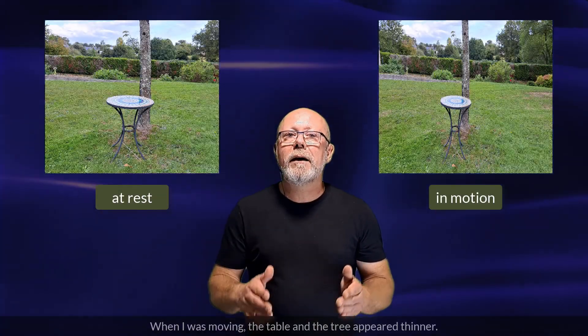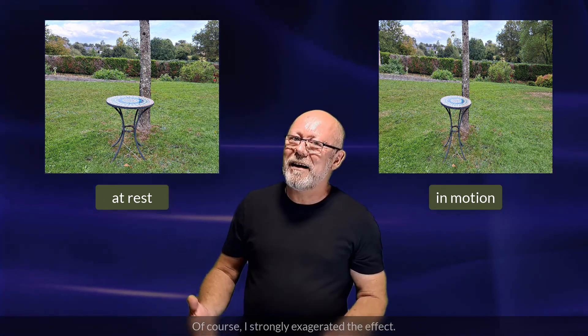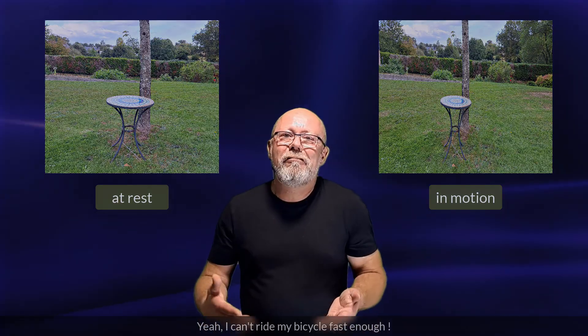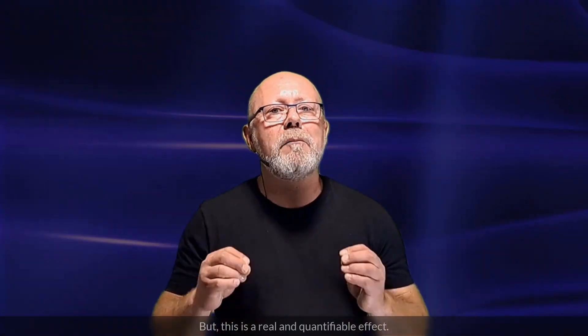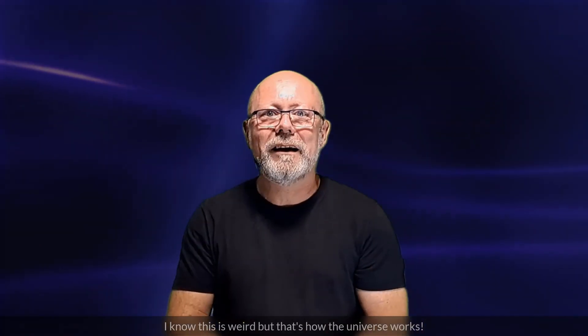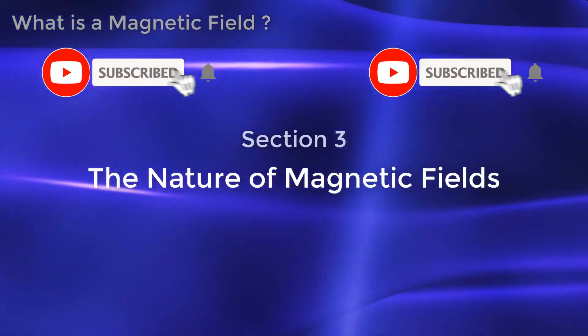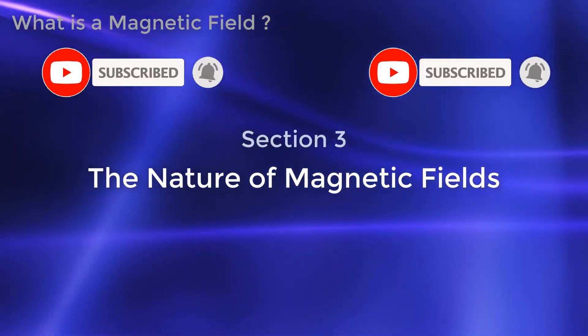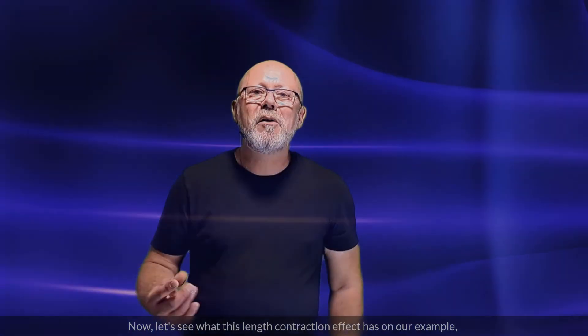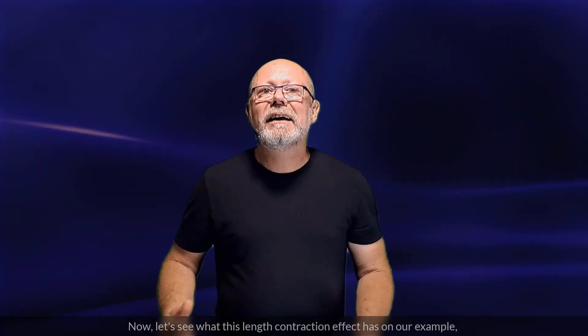These are the pictures I got. When I was moving, the table and the tree appeared thinner. Of course, I strongly exaggerated the effect. Yeah, I can't ride my bicycle fast enough. But this is a real and quantifiable effect. I know this is weird. But that's how the universe works. Now, let's see what this length contraction effect has on our example with the cable and the test charge.